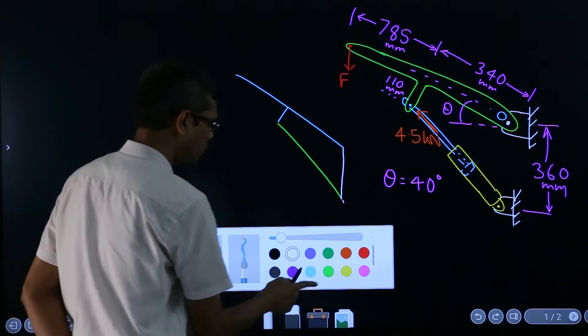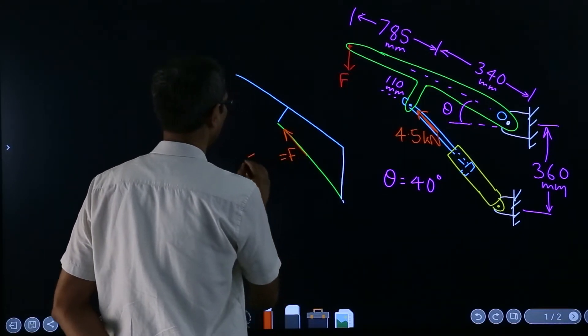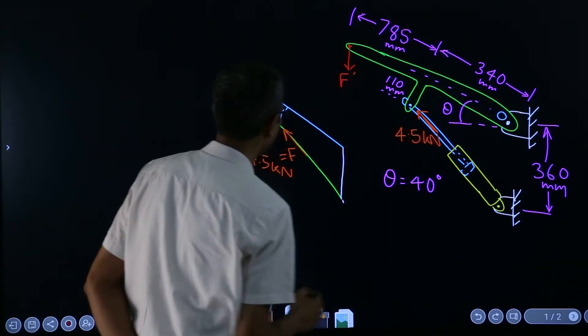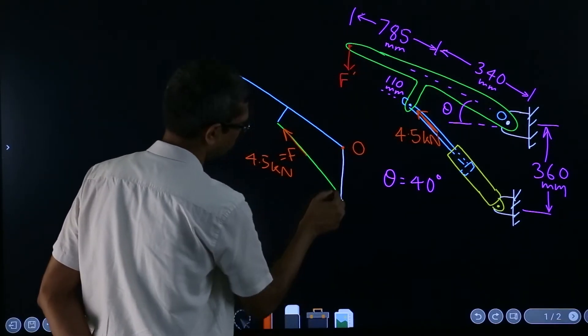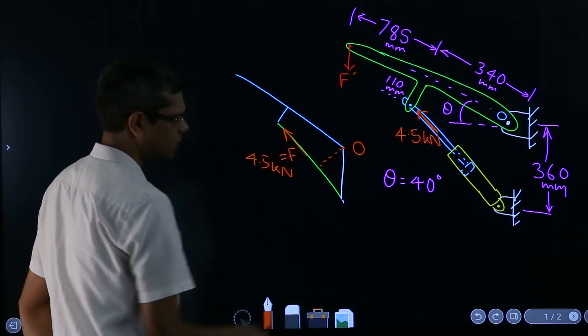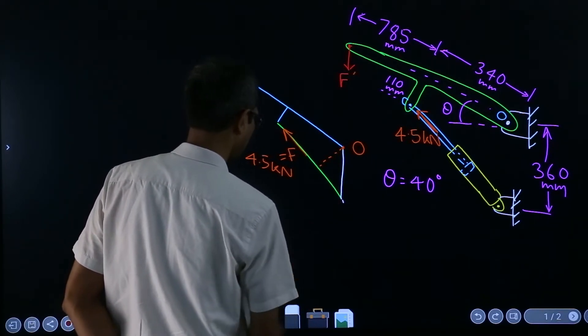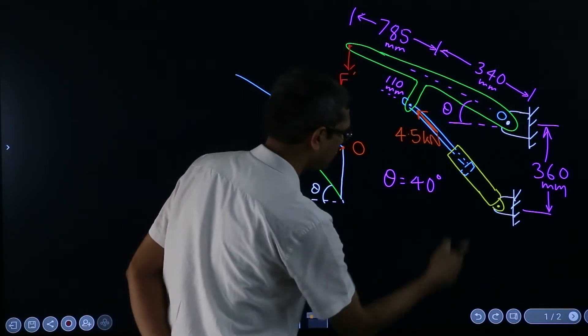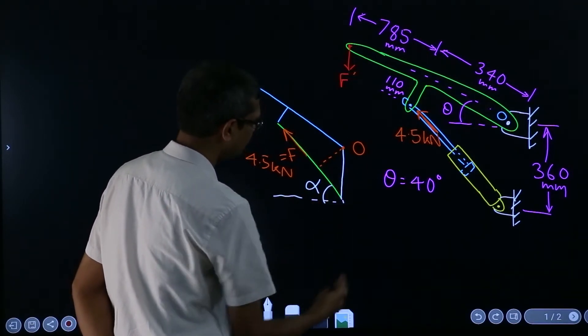Then I will show the force here is equal to 4.5 kilonewtons. Now I need to find out the moment about this point, so somehow if I can figure out this distance then it is done because force times this distance will be the answer. For that, for example if I can figure somehow this angle, not theta but maybe alpha, if I can figure out this angle then I am done.